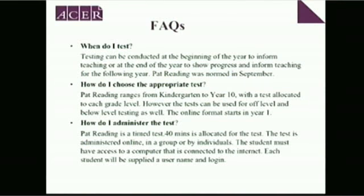It will provide normed information for PATR reading and covers a range of text types which you'll see once your children start doing the test. In terms of the vocabulary test, which is also available, we've extended some tests to include Year 9 and Year 10. You've already decided to test in September, which is perfect as PATR reading was normed in September. The test range goes from kindergarten to Year 10 in the written exam, but online it starts in Year 1, allowing you to choose a test specific for each grade — Test 1 for Year 1, Test 2 for Year 2, and so on.